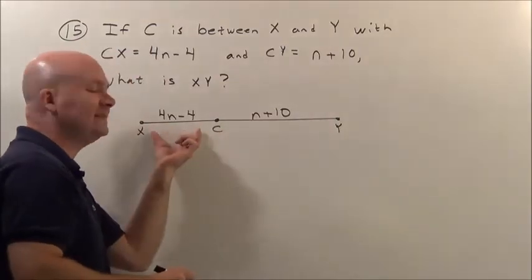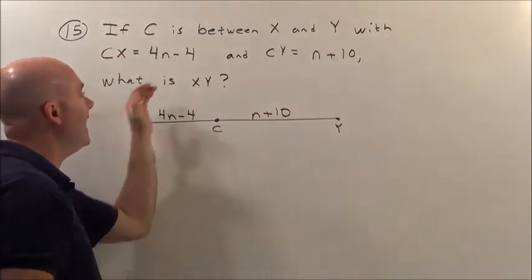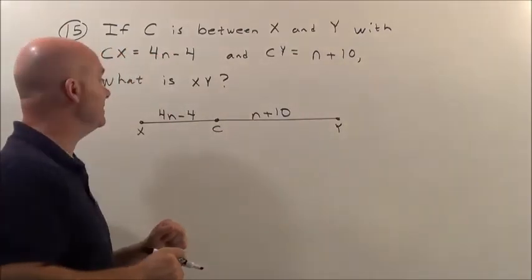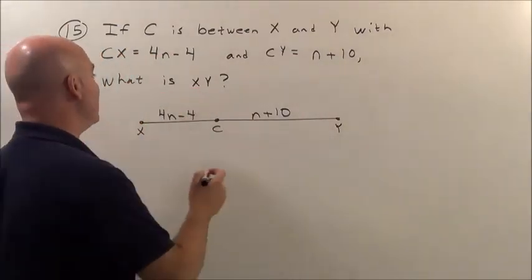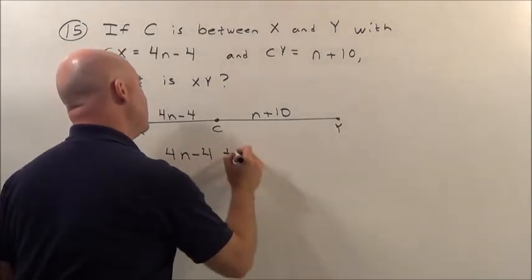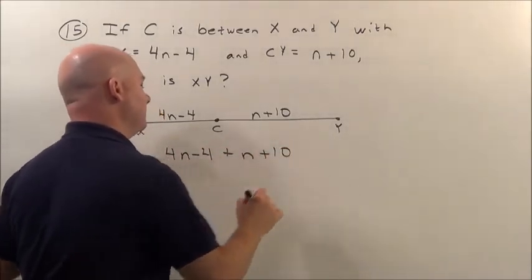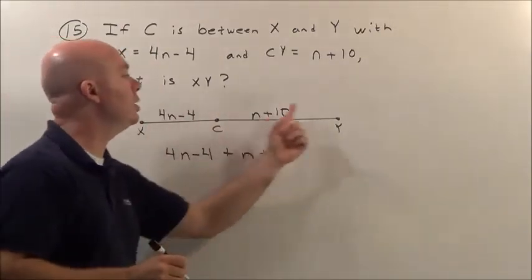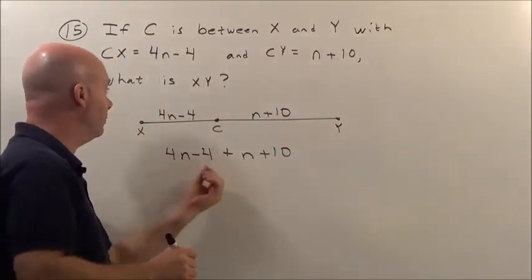We know that XC's distance plus CY's distance adds up to the whole thing's distance of XY. So when it says, what is XY? XY is simply going to be 4n minus 4 plus n plus 10. That's the expression that tells me the total distance. Now I need to clean it up a little bit.